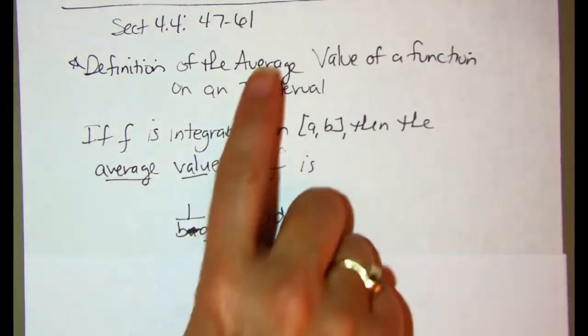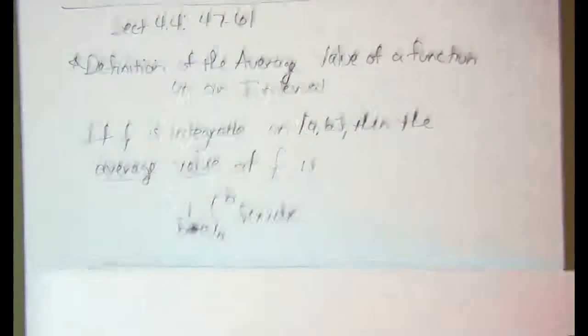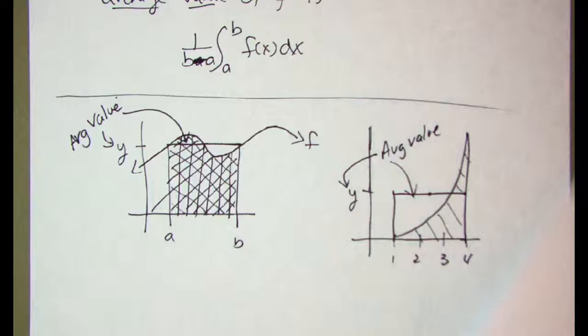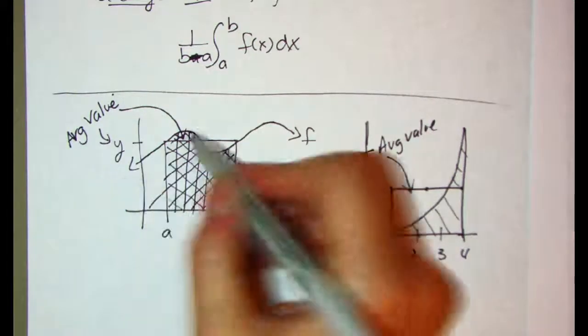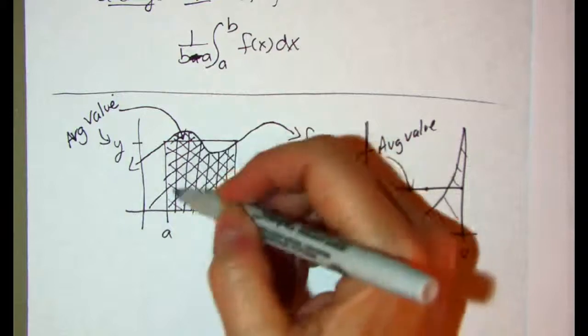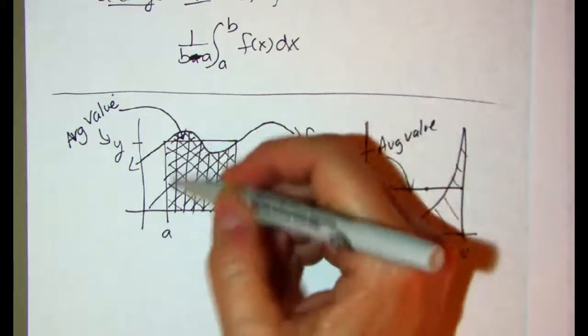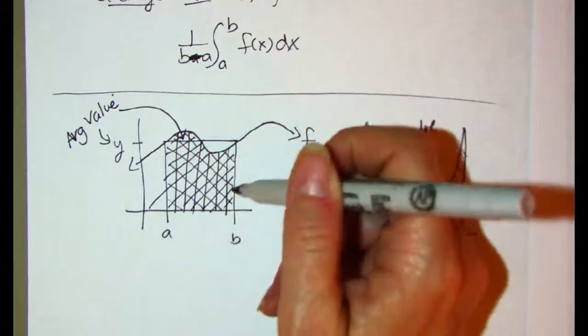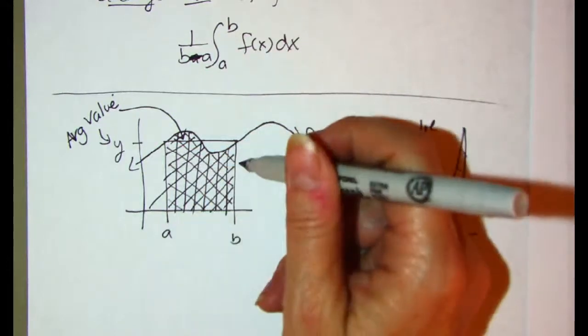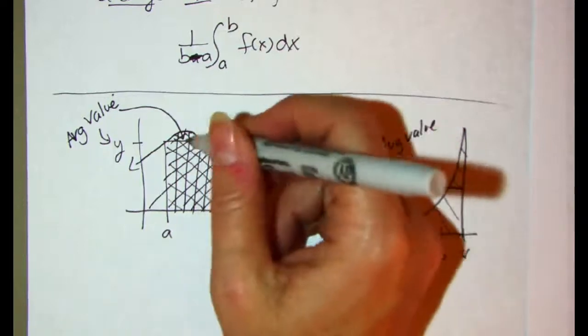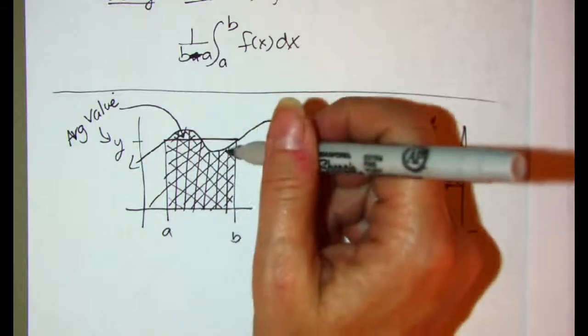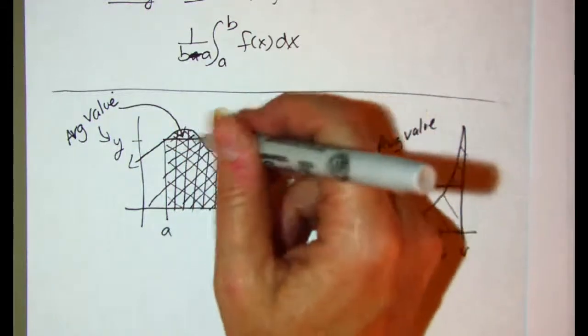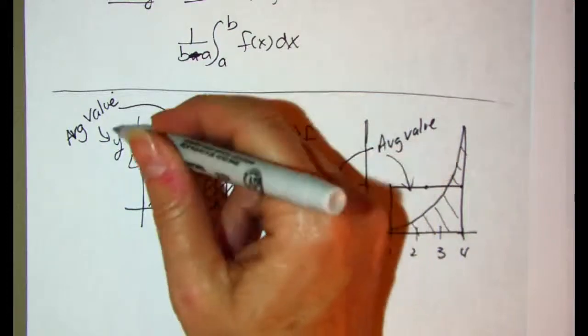So what does it mean to find the average value of a function on an interval? Well, here is a couple of pictorial representations of finding the average value of a function. So here I'm going to have a function f from a to b, and what we want to do is we want to find the area underneath that curve trapped above the x-axis and the two vertical lines of x equals a and x equals b. And so you can tell that this little piece could be stuck into this piece, and I would have then a rectangle. And so by connecting these two ends, that this line here, this y value, that's my average value.